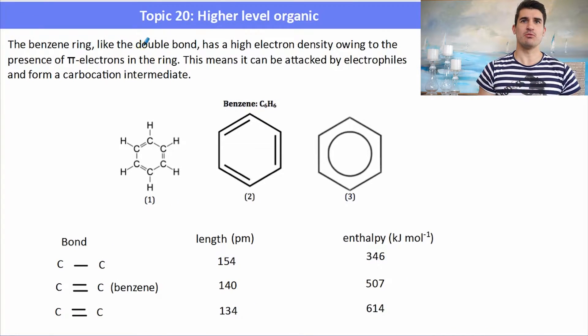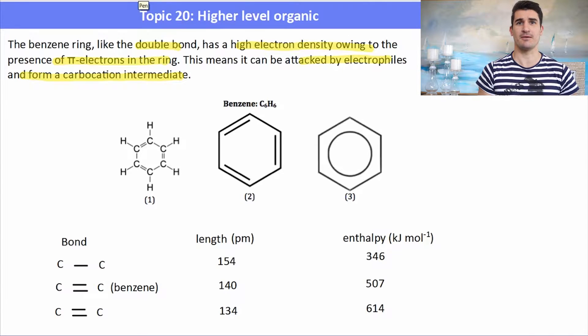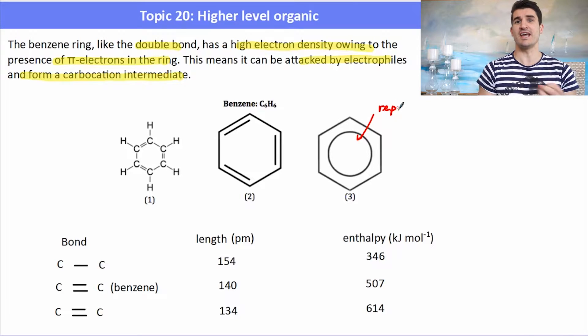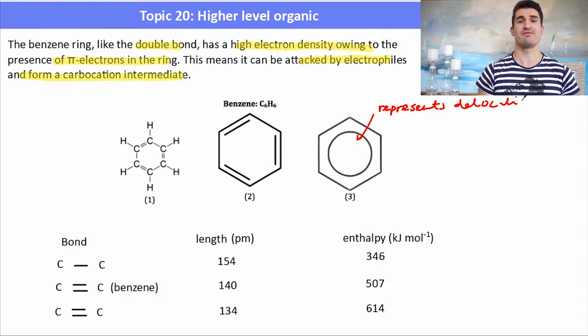The benzene ring, like a double bond, has a high electron density owing to the presence of the pi electrons in the ring. That high electron density means it is able to be attacked by electrophiles to form a carbocation intermediate. Here I've got three different representations of benzene. Each of them is acceptable in the IB program, but the one on the right with the circle represents that we have delocalization within the ring.